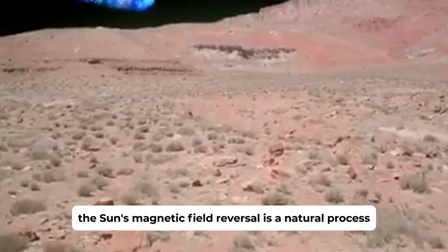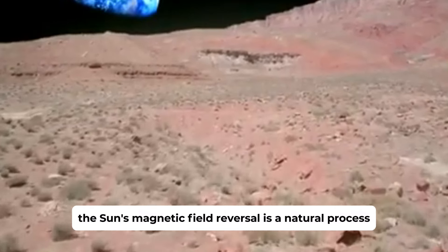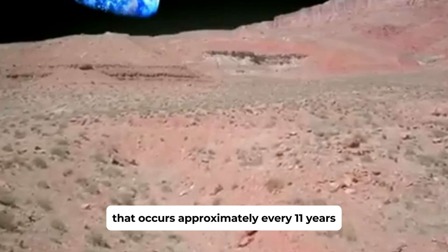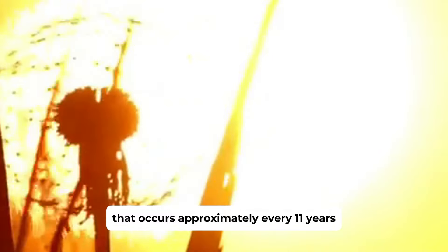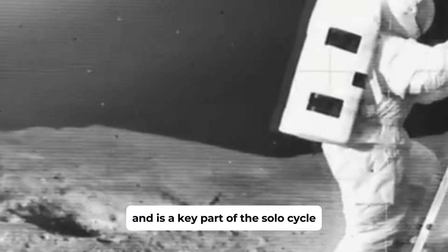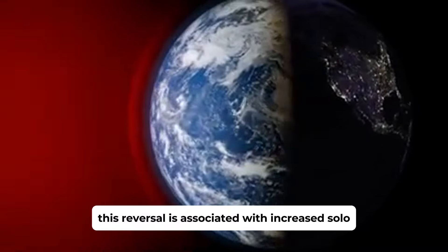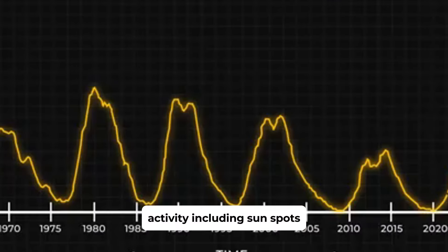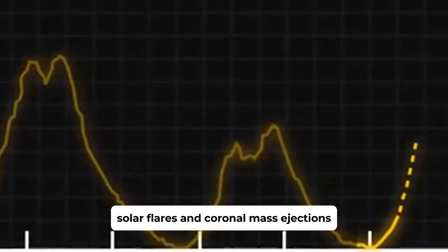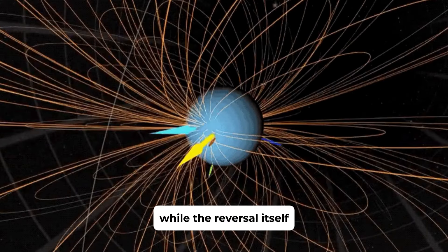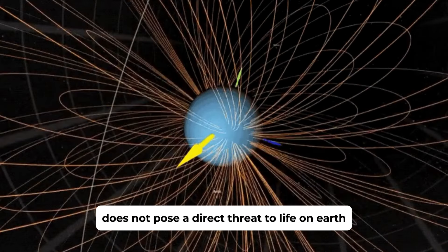In summary, the sun's magnetic field reversal is a natural process that occurs approximately every 11 years and is a key part of the solar cycle. This reversal is associated with increased solar activity, including sunspots, solar flares, and coronal mass ejections.